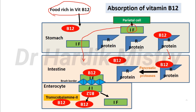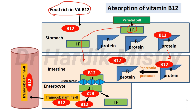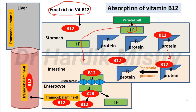Vitamin B12 then binds with transcobalamin 2 for transportation and absorption. The binding of vitamin B12 with transcobalamin 2 is necessary. This transcobalamin 2 and vitamin B12 complex is released into the blood vessels and reaches the liver. Inside the liver, transcobalamin 2 is released from vitamin B12, and vitamin B12 binds with transcobalamin 1. Vitamin B12 is stored inside the liver as a complex with transcobalamin 1.